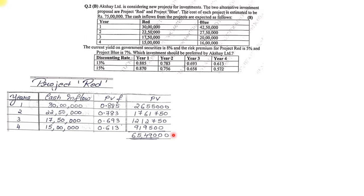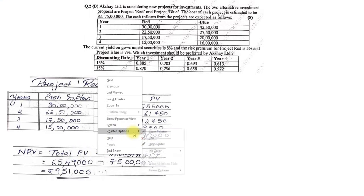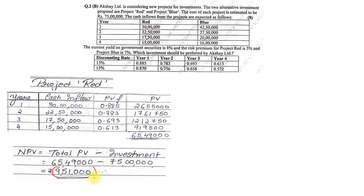Once we get the total PV, we apply the NPV formula: NPV = Total PV − Initial Investment. Total PV is 65,49,000 and initial investment is 75 lakhs. So NPV = 65,49,000 − 75,00,000 = negative 9,51,000. Project Red gives a negative NPV, shown in brackets as it is a loss.